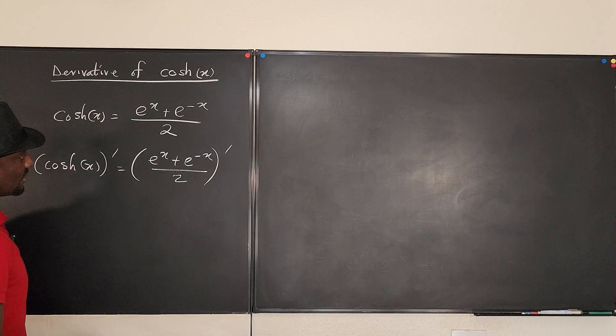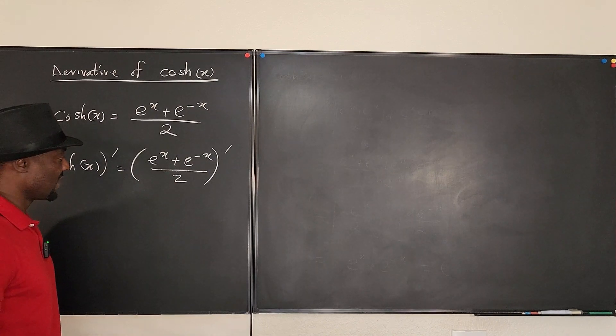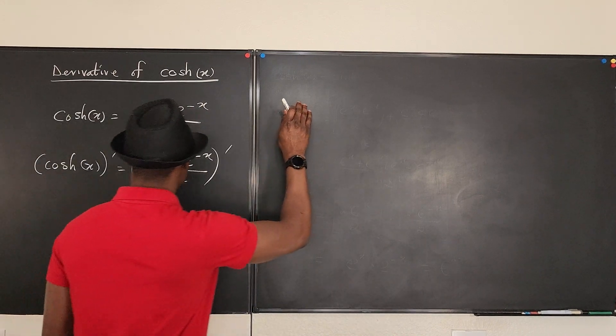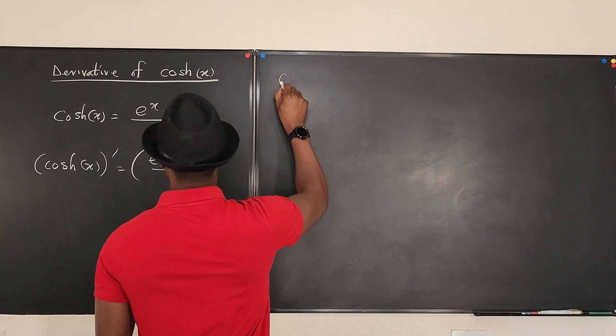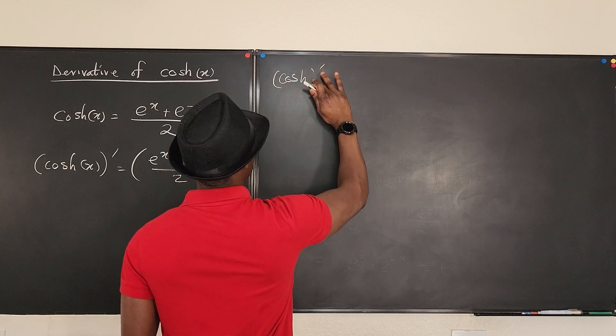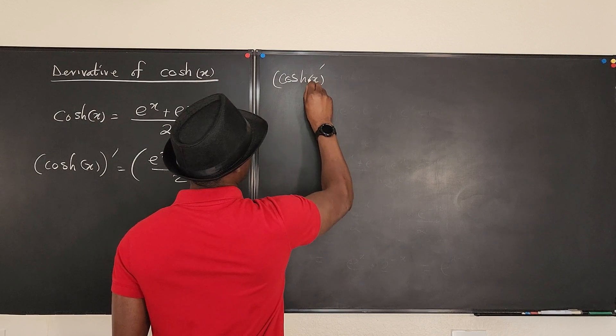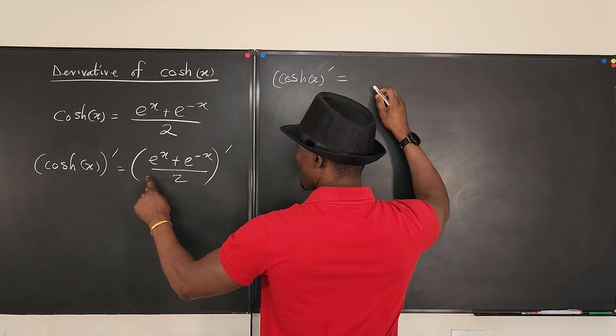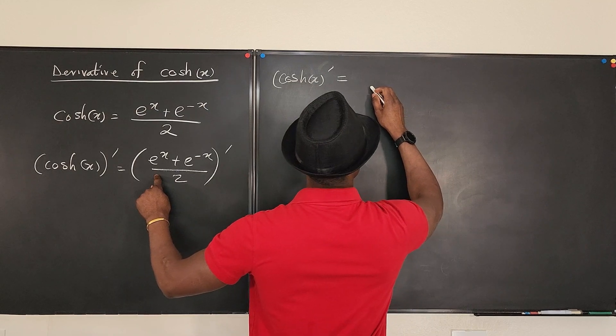How do we differentiate this? We can always split this. There's no special technique. Let's write it on this side. The derivative of the hyperbolic cosine of x will be equal to, we'll try to differentiate this.